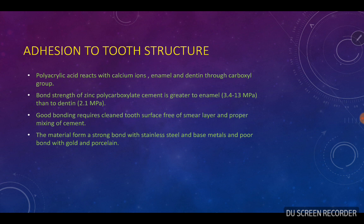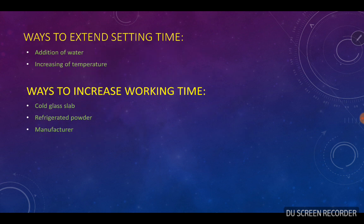The material forms a strong bond with stainless steel and base metal, and is poorly bonded with gold and porcelain. Addition of water and increasing the temperature of the mixing environment are the two most efficient ways to accelerate the setting time. The working time can be extended by using a cool glass slab or by refrigerating the powder. It is not recommended to refrigerate the liquid, as it leads to gelation of the polymer liquid due to hydrogen bonding. Depending on the method of manufacture, the setting time can be altered.